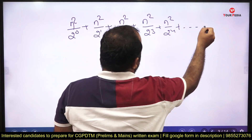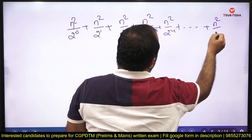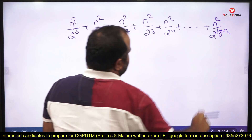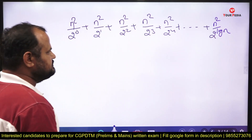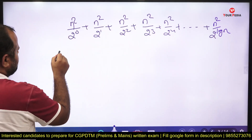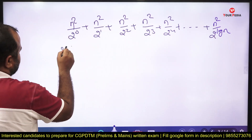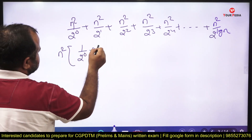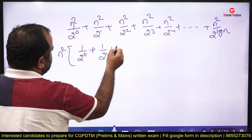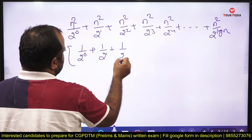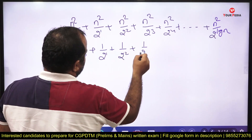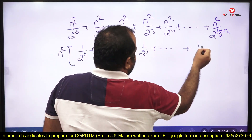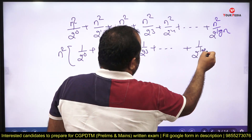The total number of levels is log n. Taking n² as a common factor, the series becomes n² · (1/2⁰ + 1/2¹ + 1/2² + 1/2³ + ... + 1/2^(log n)).